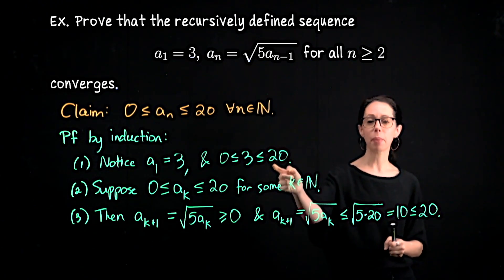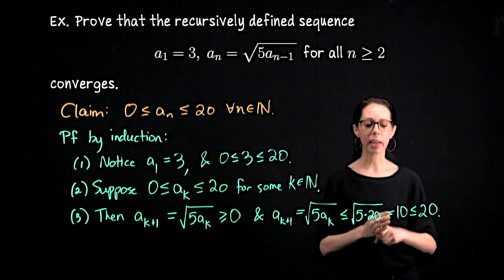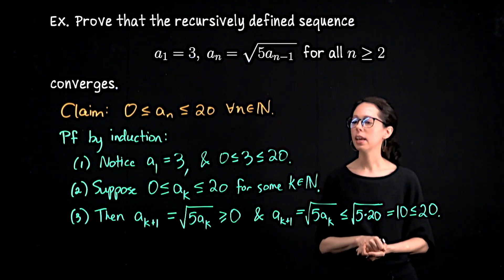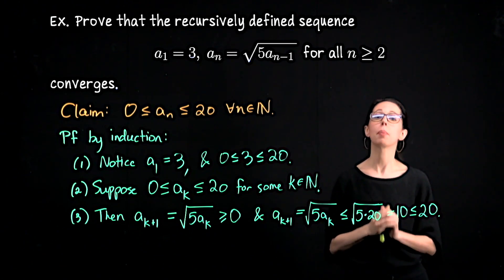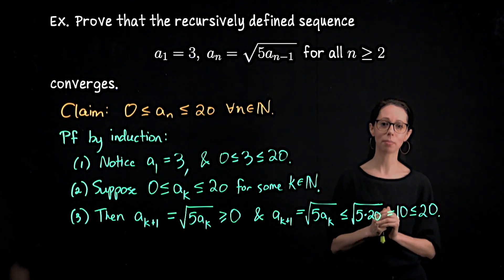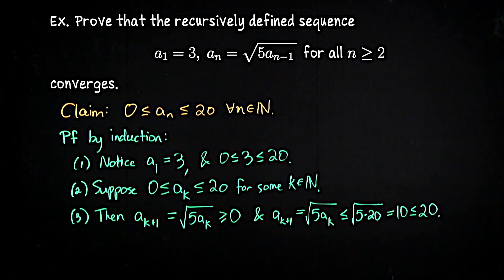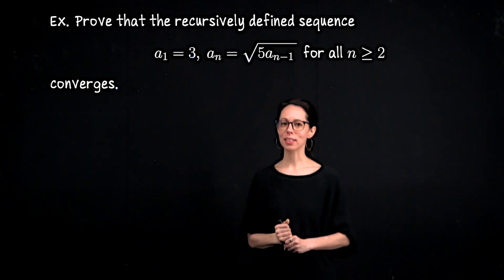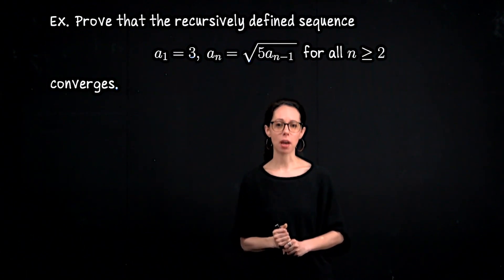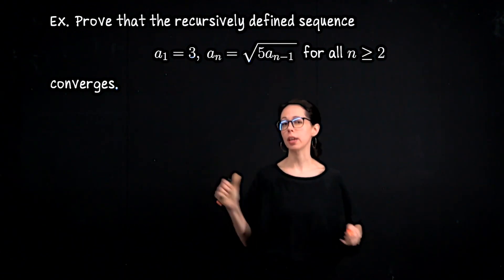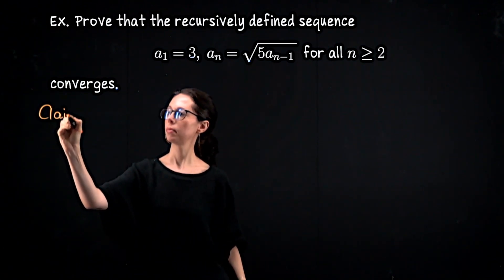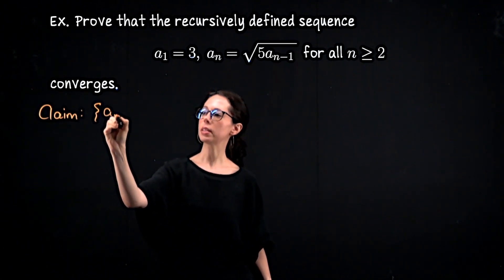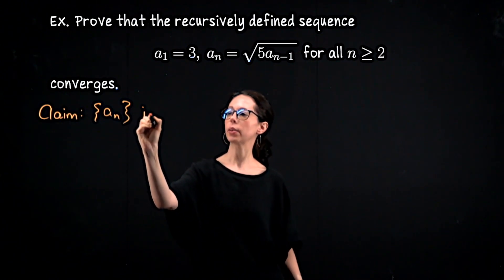You might be able to work out a much better bound than 20, but I chose this for computational convenience. It's not the least upper bound, but it is a bound and that's all we need. We've proven this sequence is bounded. Now we need to show it's monotone. This particular sequence is monotone increasing, so our next claim is that the sequence a sub n is an increasing sequence.